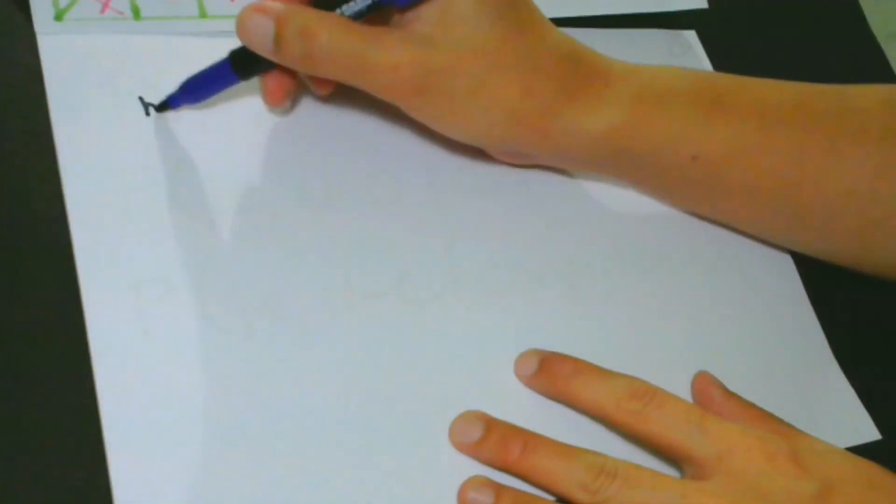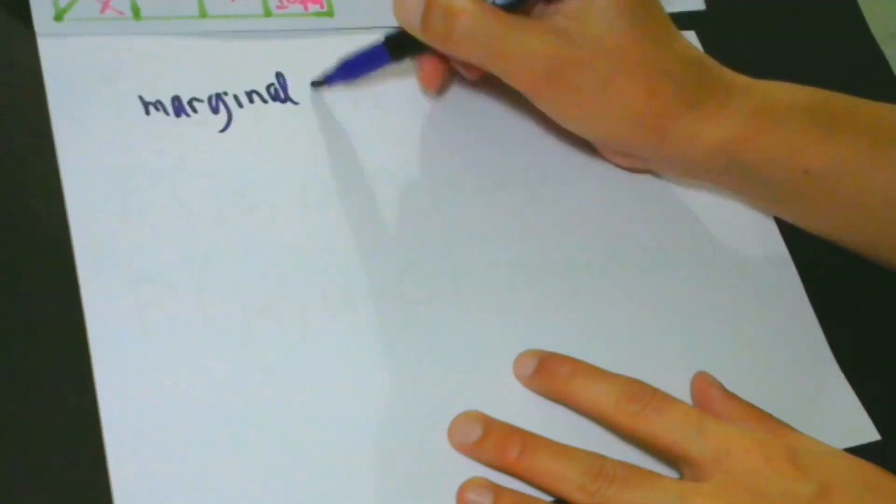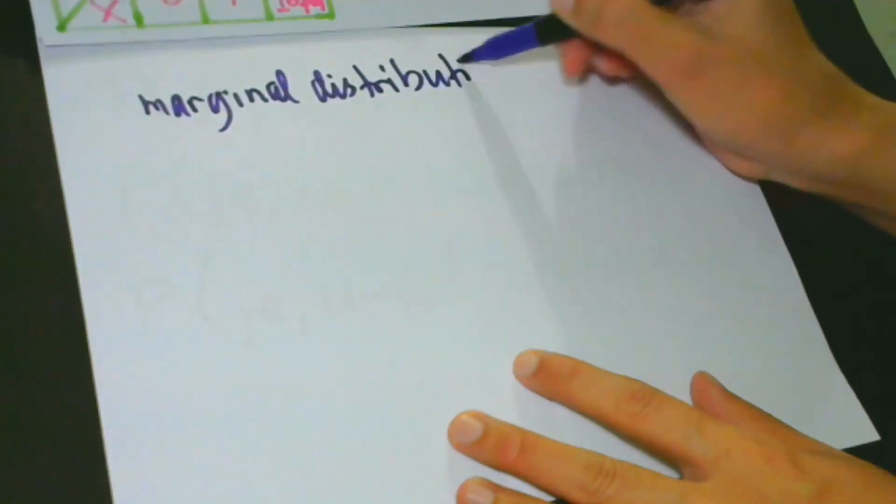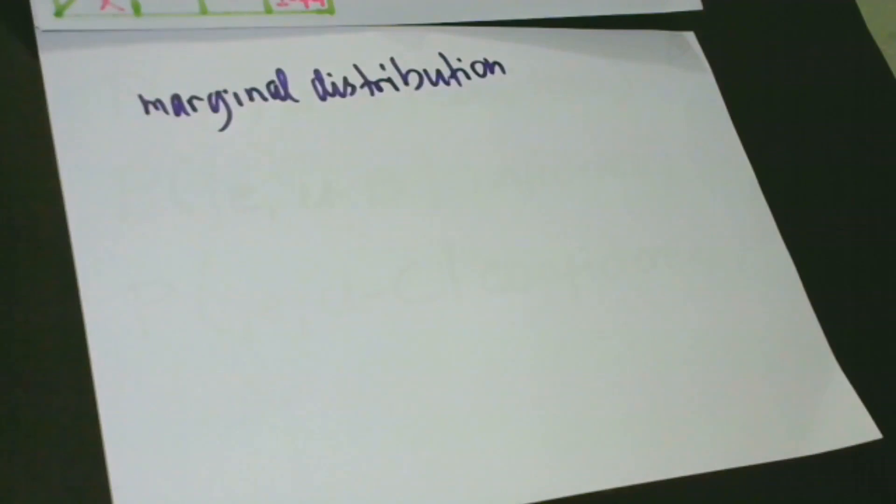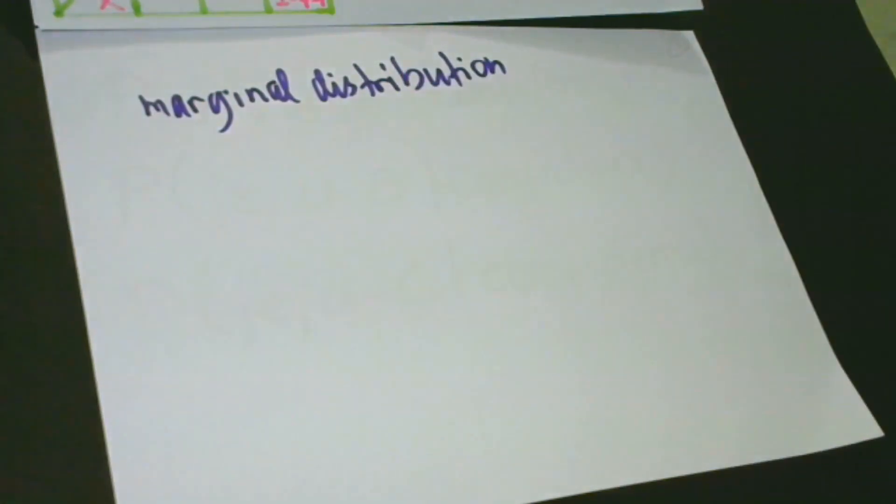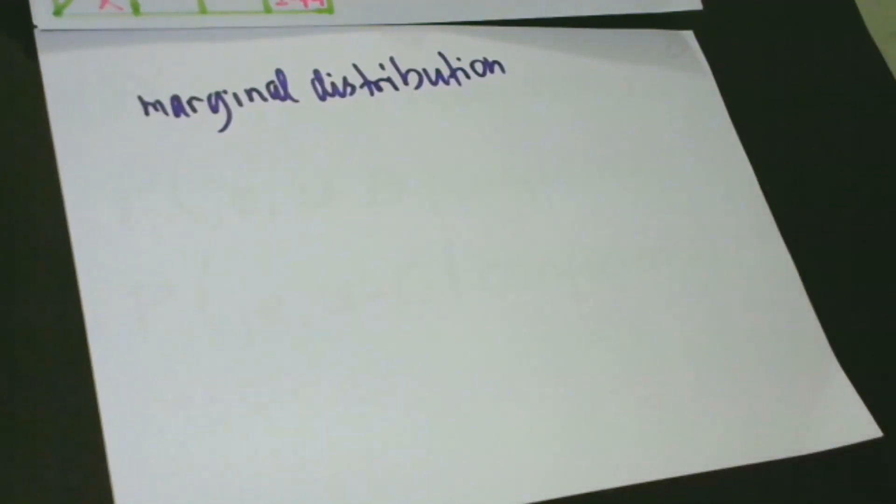First is the marginal distribution. Marginal distribution gives the probabilities of various values of variables in a subset without reference to the values of other variables. Here, in our example, our variables are X and then we have Y.